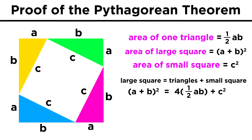So we can make an equation that states the following: A plus B quantity squared, the area of the big square, is equal to four times one-half AB, which is four times the area of one triangle, since there are four triangles, plus C squared, the area of the small square.